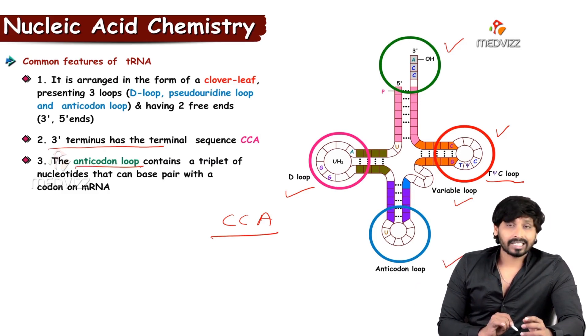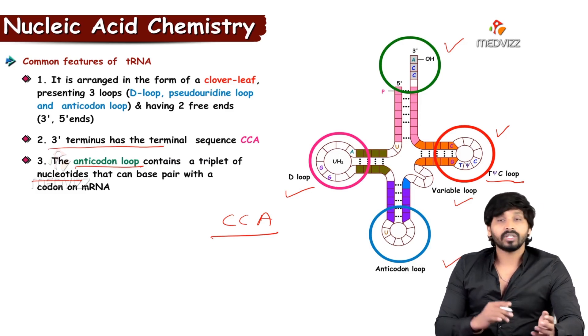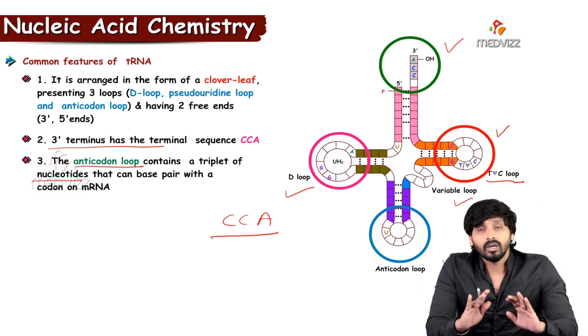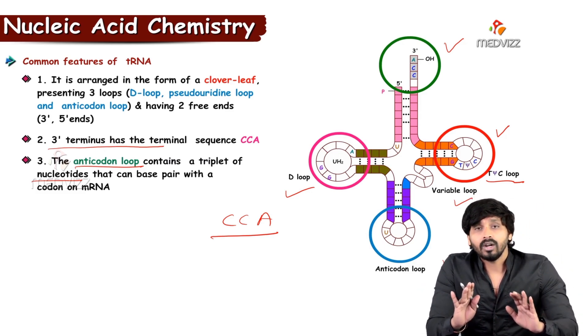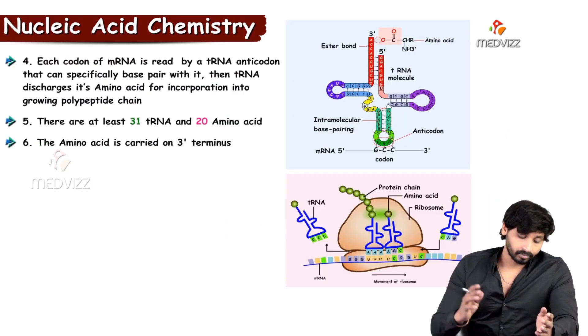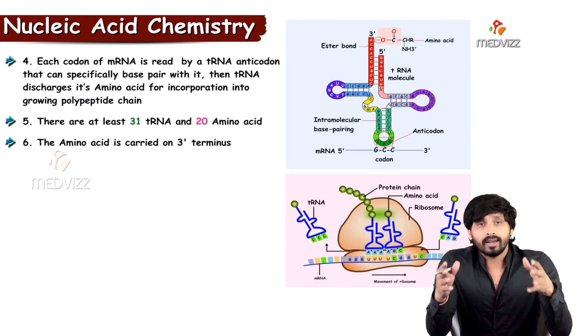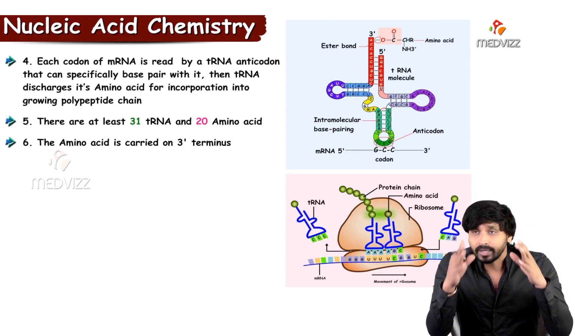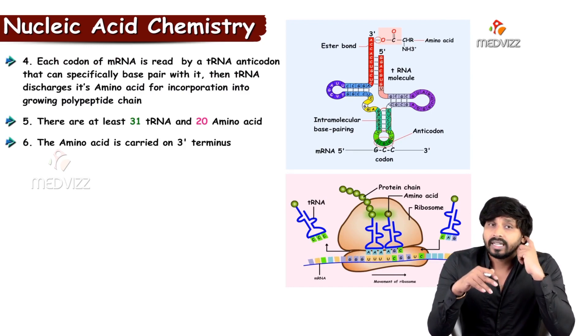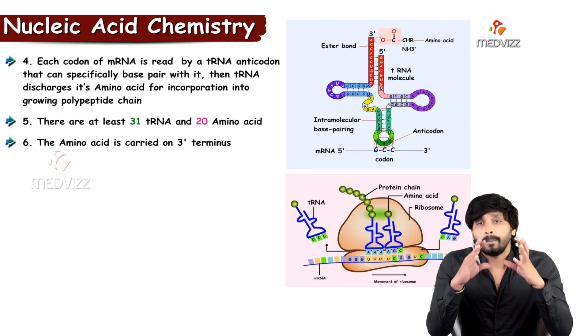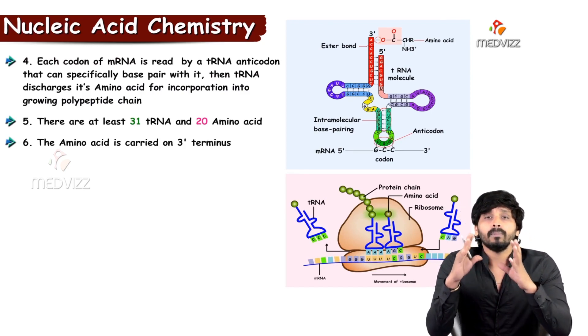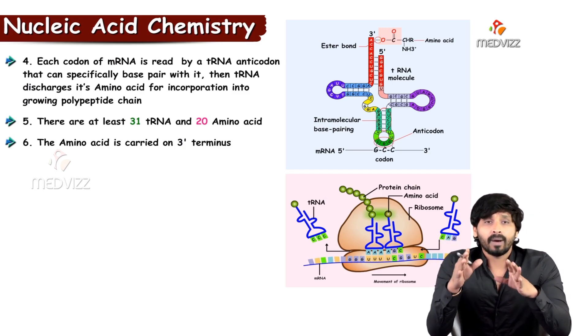And anticodon loop, as I mentioned earlier, this anticodon loop contains triplet of nucleotides which can base pair with the bases present on mRNA. Each codon of mRNA has to be read by tRNA anticodon that specifically base pairs with the mRNA. The tRNA discharges particular amino acid based on the base pairing of tRNA with the mRNA.